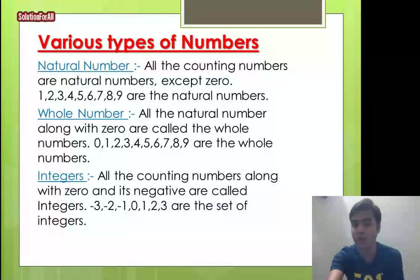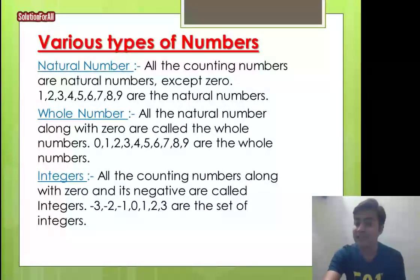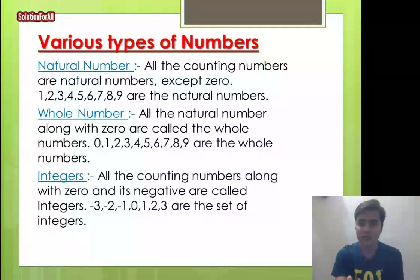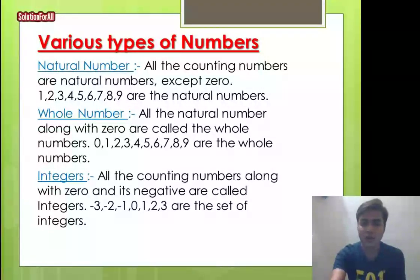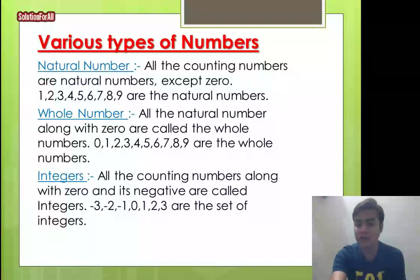Integers are all the counting numbers along with zero and their negatives. On the number line — like the Cartesian plane — we have zero at the origin, positive numbers on the right, and negative numbers on the left. So integers include: ..., −3, −2, −1, 0, 1, 2, 3, and so on.